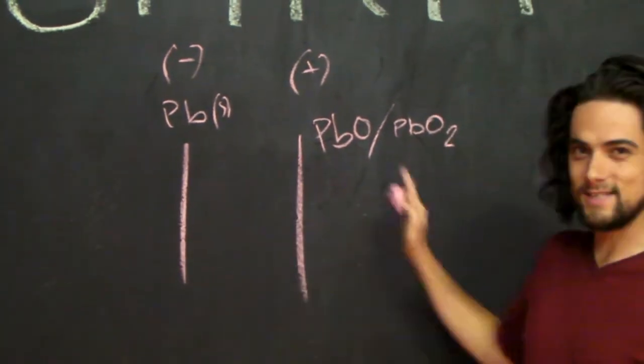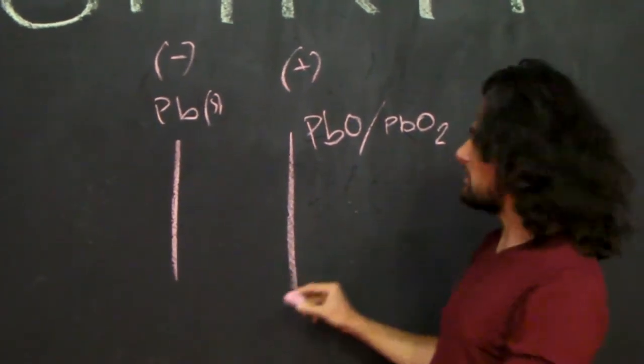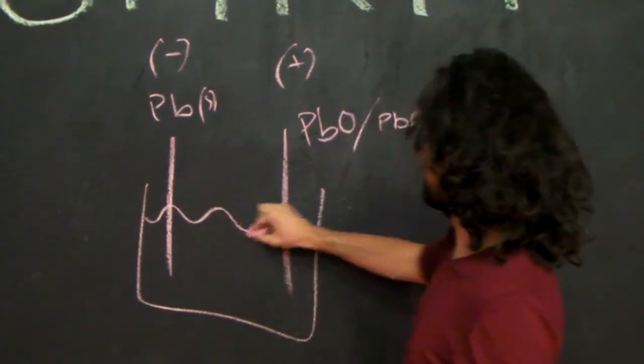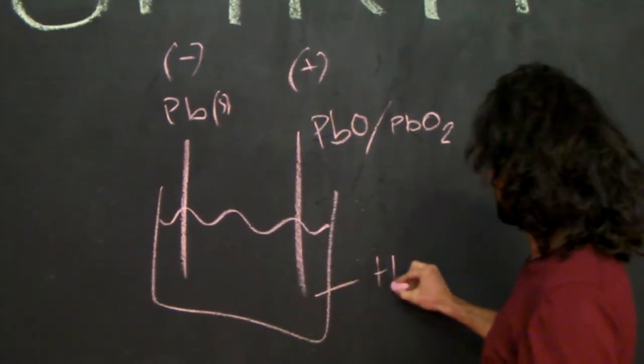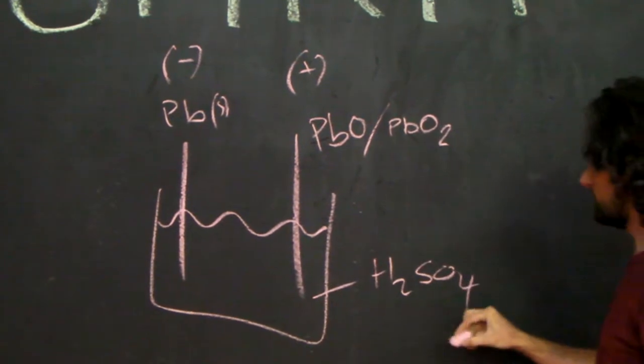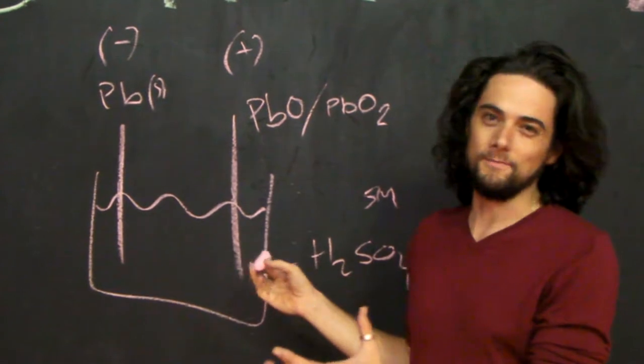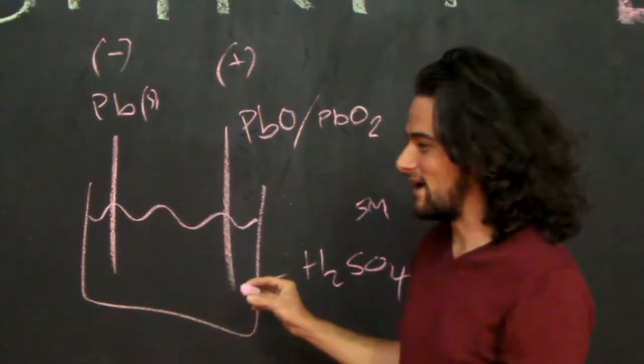In this example, what is actually happening in this battery - we've got our little bucket and let's draw some electrolyte. Let's make that sulfuric acid, five mole. This is like a car battery, effectively - a really blown out model of a car battery.